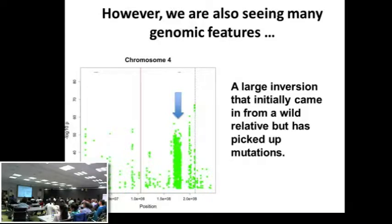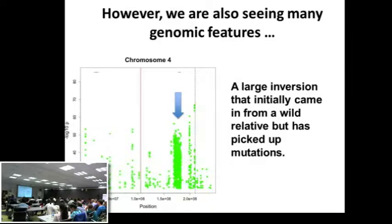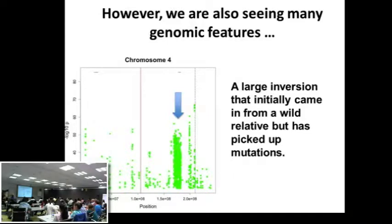A lot of these low recombination regions of the genome — essentially you're getting complementation of deleterious mutations, and that's why you're getting a flowering time effect on them. The one on chromosome 4, given its origin with Mexicana, may be a straight adaptive loci. But a lot of these don't have any canonical genes that we know of in them, so it's much more likely they have more to do with the energy balance of the plant.